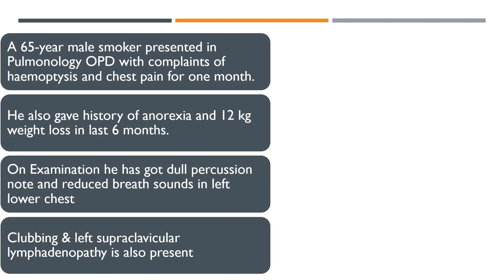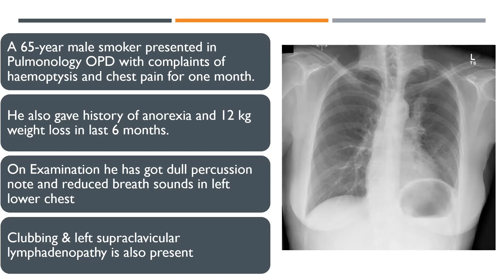When you are done and have come up with something, you can look at this X-ray to further guide you towards the diagnosis. We will spend some time discussing this case. This is a case of lung cancer, as you can see from the presenting complaints and the history of weight loss and anorexia. On examination, clubbing and lymphadenopathy are all suggestive of lung cancer.